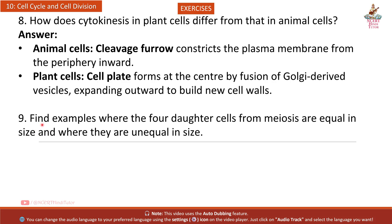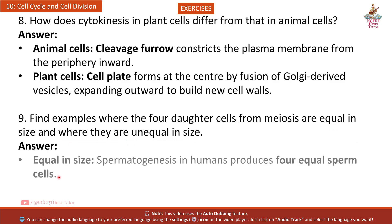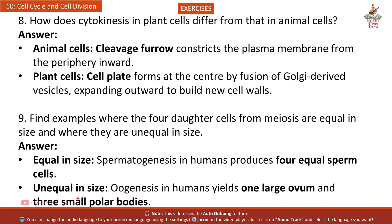Question 9: Find examples where the 4 daughter cells from meiosis are equal in size and where they are unequal in size. Equal in size: spermatogenesis in humans produces 4 equal sperm cells. Unequal in size: oogenesis in humans yields 1 large ovum and 3 small polar bodies.